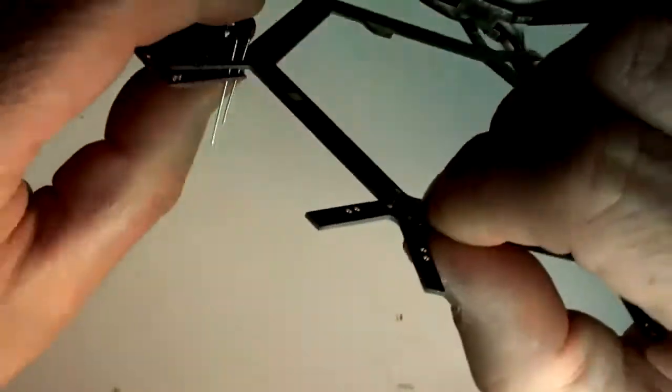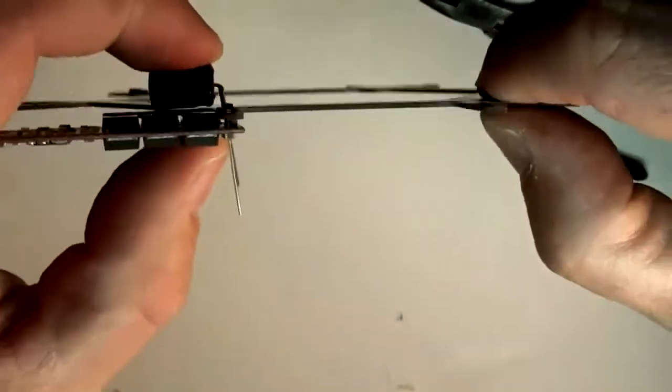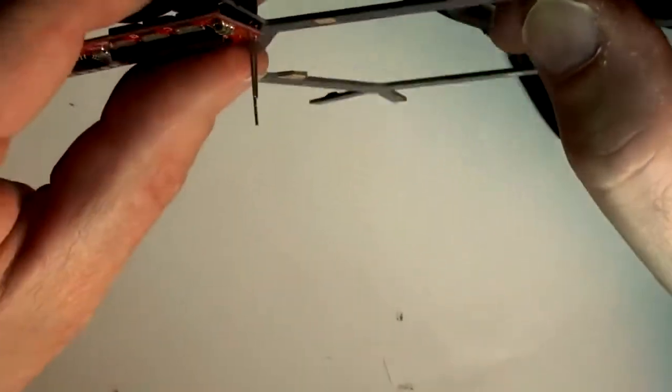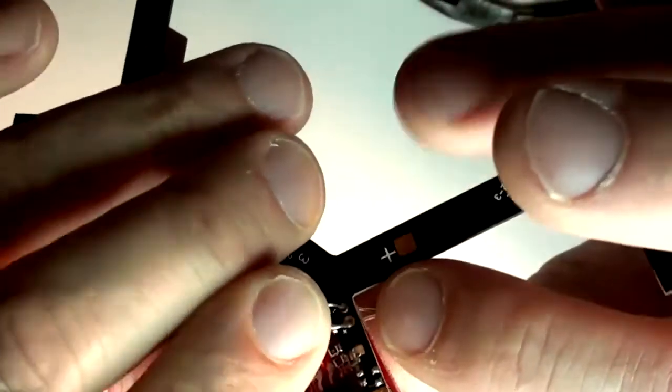So you kind of have something like this. So you kind of have made a sandwich now. So you got the board and you got it through. Now, you can just gently start bending the board back.